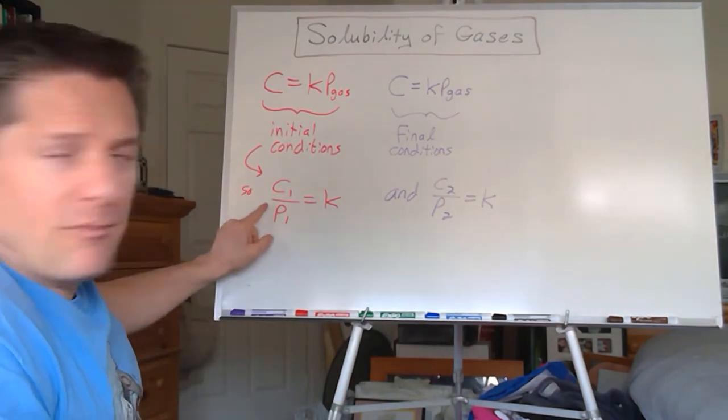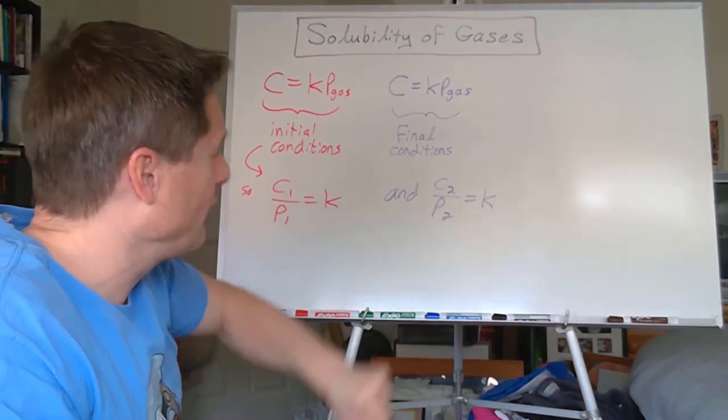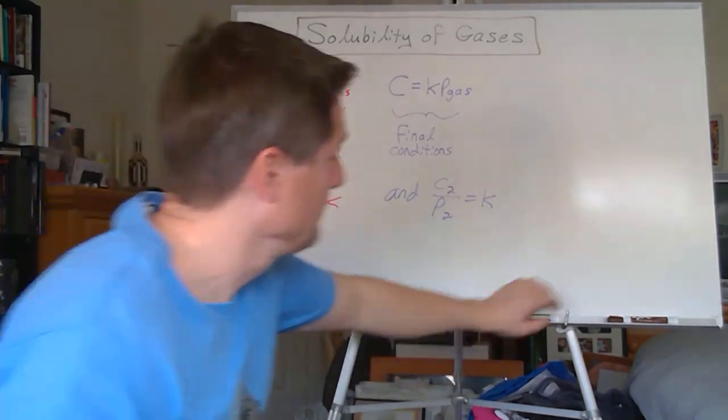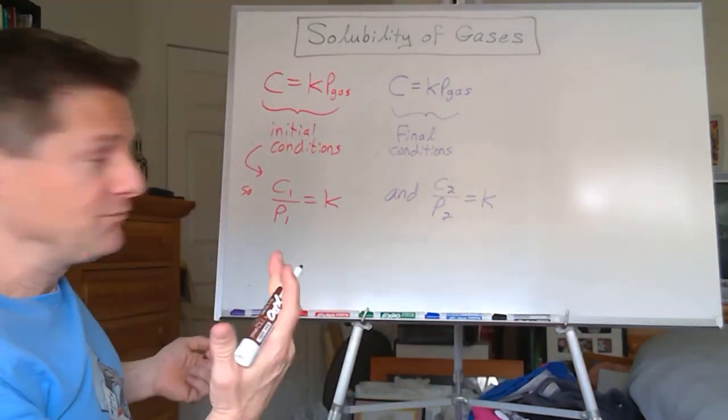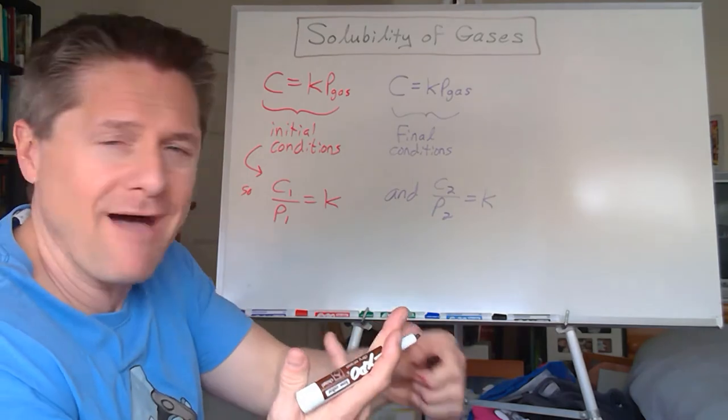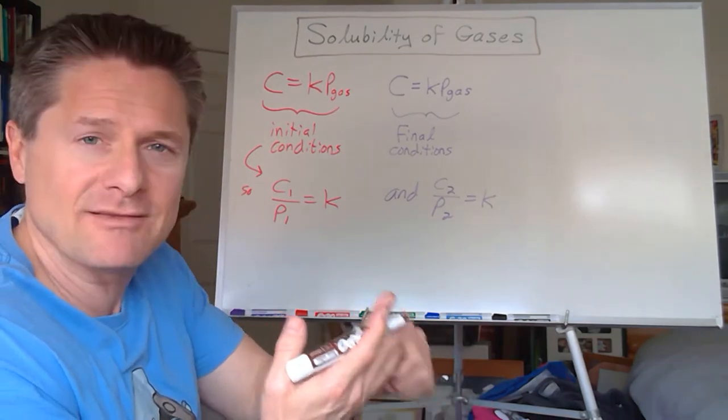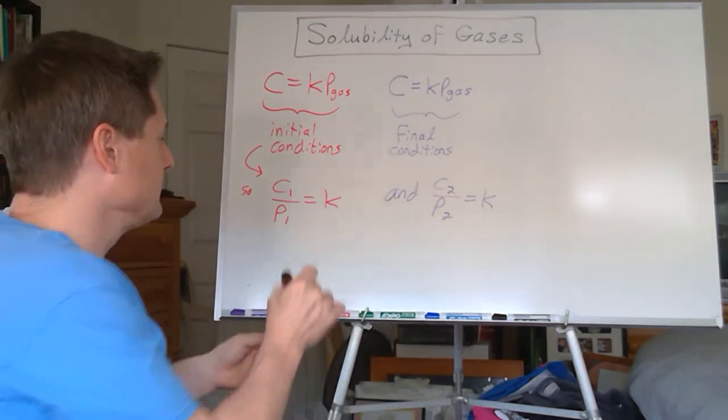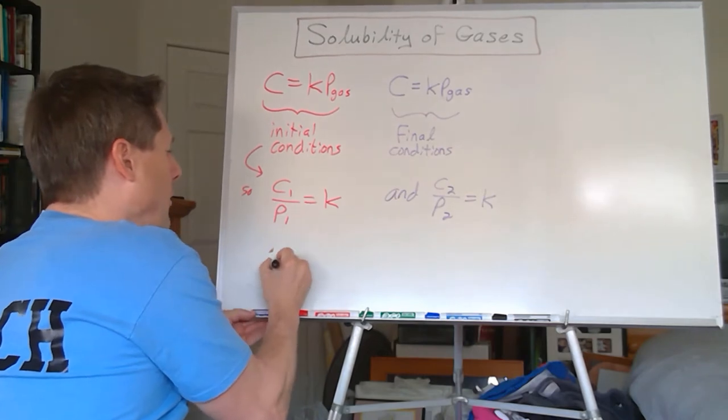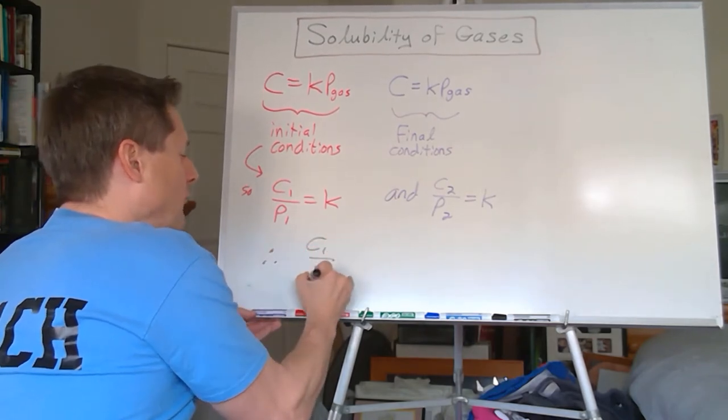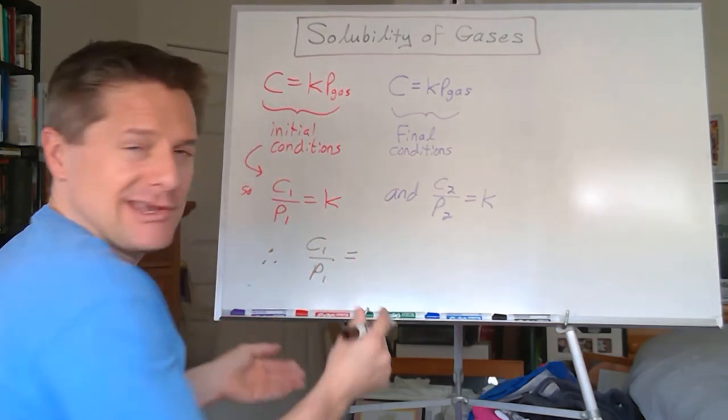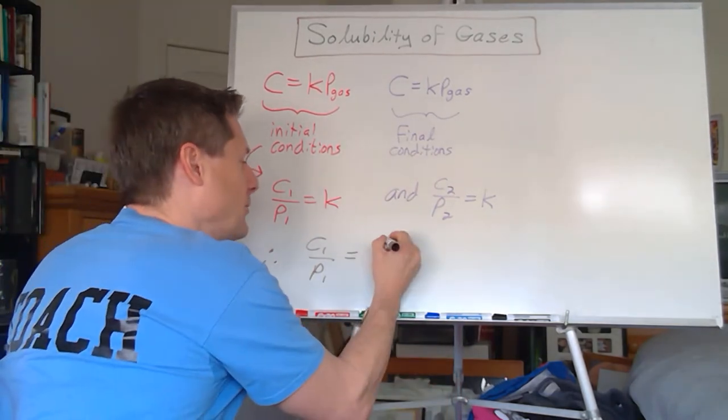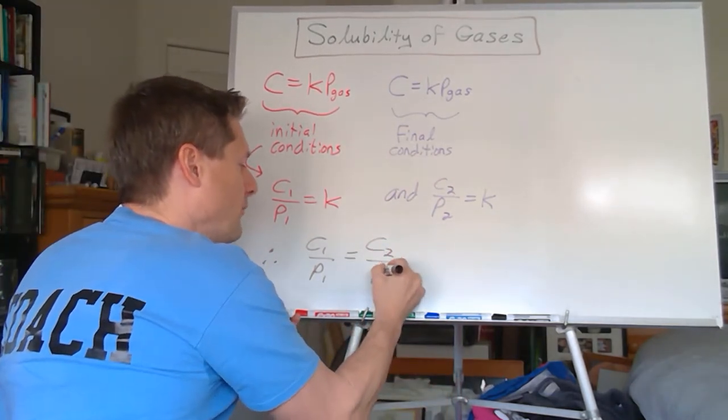Well, if C1 over P1 equals K, and C2 over P2 equals K, right? You get this with a lot of the, Boyle's law, Avogadro's law, Gay-Lussac's law, Charles' law, all these things. Therefore, C1 over P1, the initial concentration divided by the initial pressure, must equal C2 over P2.